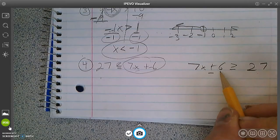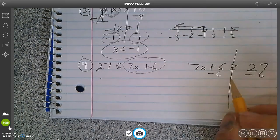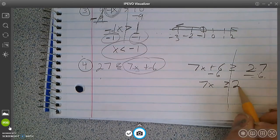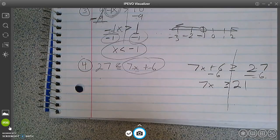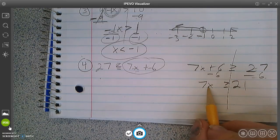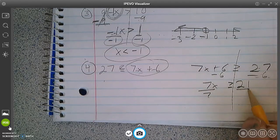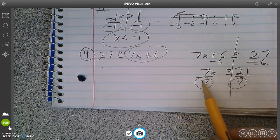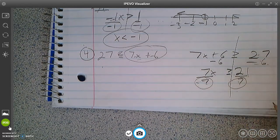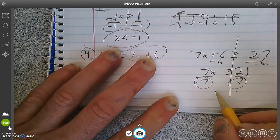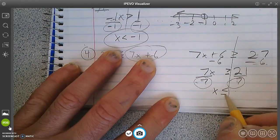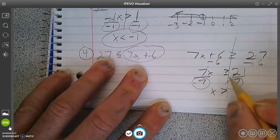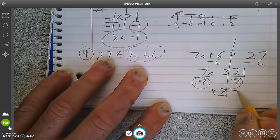Subtract 6 on both sides. 7x is greater than or equal to 27 minus 6, which is 21. 7 times x is, opposite of multiplication is division. Am I dividing by a positive or a negative? Dividing by a positive. Do I flip the sign? No. x is less than or equal. No, that's not right. That's not right. I don't flip the sign. I keep it the same because I'm dividing by a positive.